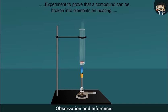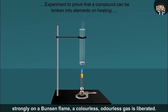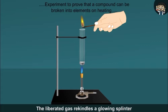Observation and Inference: When the test tube containing mercuric oxide is heated strongly on a Bunsen flame, a colorless, odorless gas is liberated. The liberated gas rekindles a glowing splinter, showing that the gas liberated is oxygen.